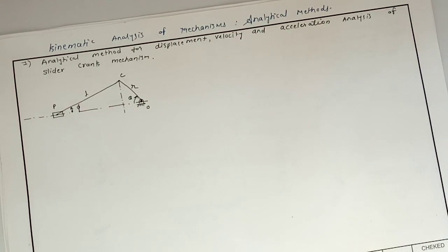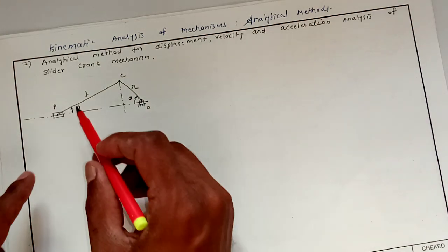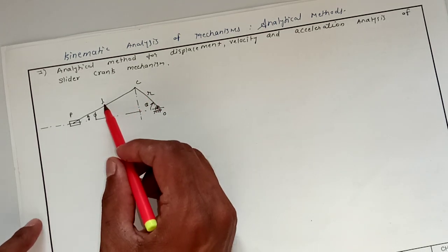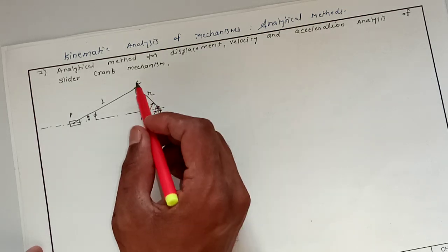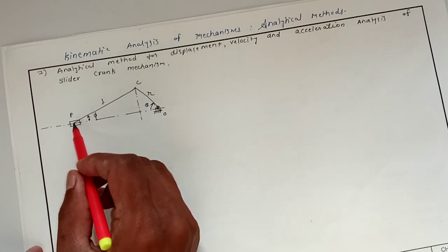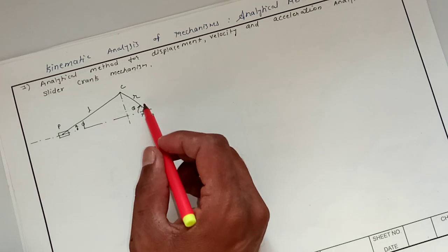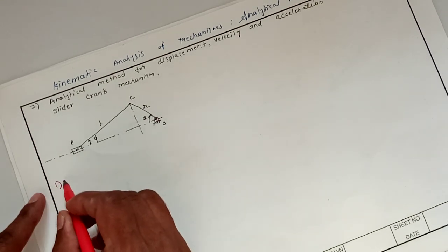Hello everyone. In today's lecture we will discuss kinematic analysis of mechanisms using analytical methods. We will derive equations for kinematic analysis of the slider crank mechanism. Here R is the length of the crank, L is the length of the connecting rod, theta is the instantaneous displacement of the crank from IDC, O is the crankshaft, C is the crank pin, P is the piston, and phi is the displacement of the connecting rod when the crank displacement is theta. First we will derive the expression for piston displacement.